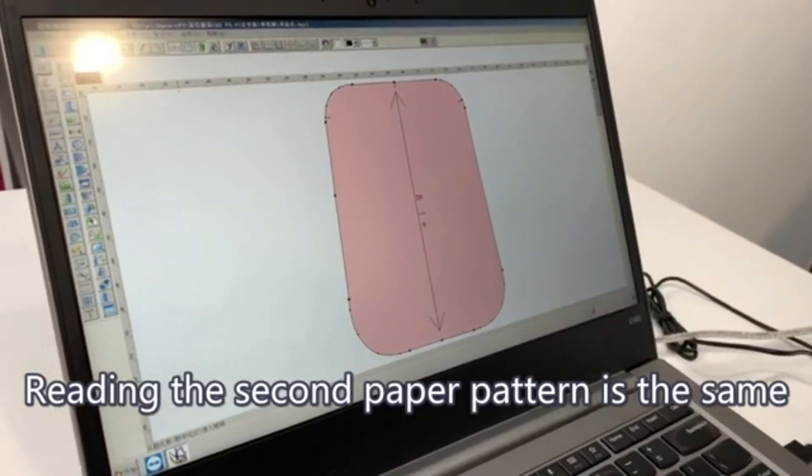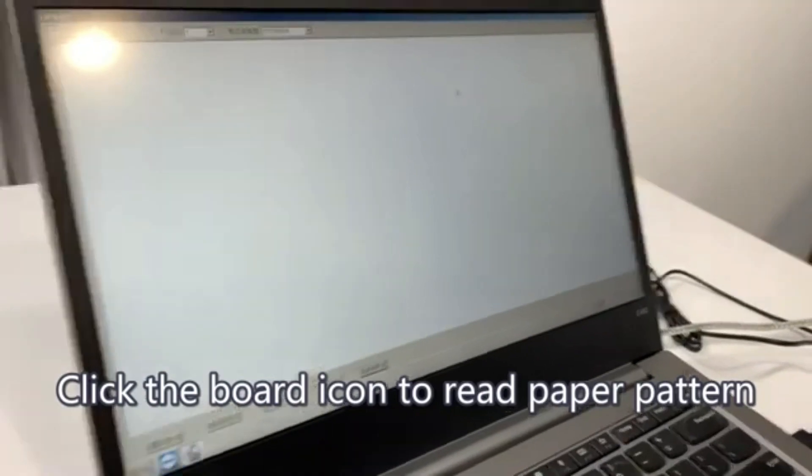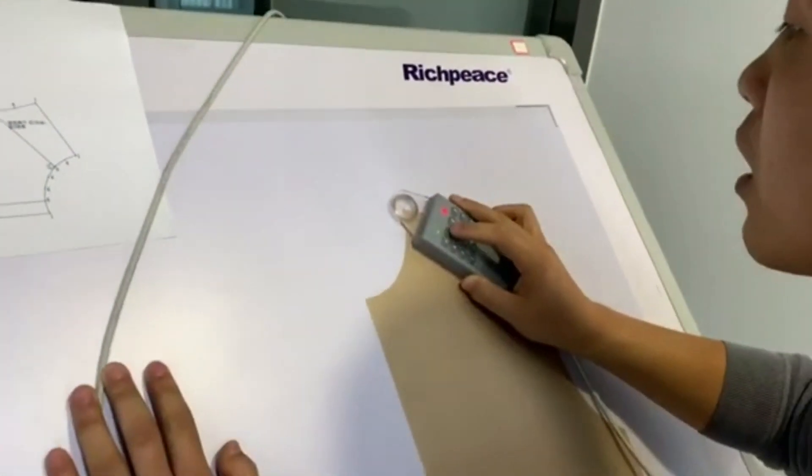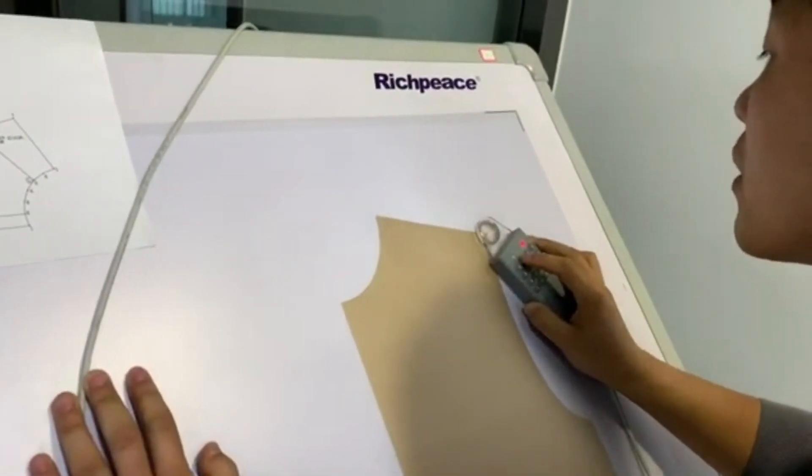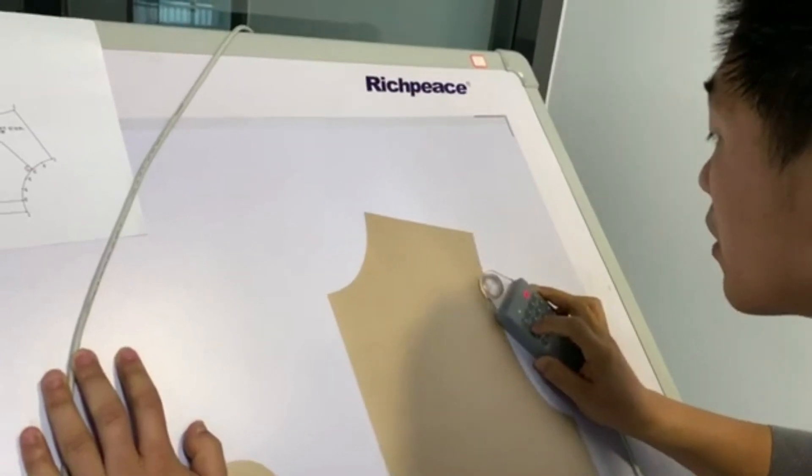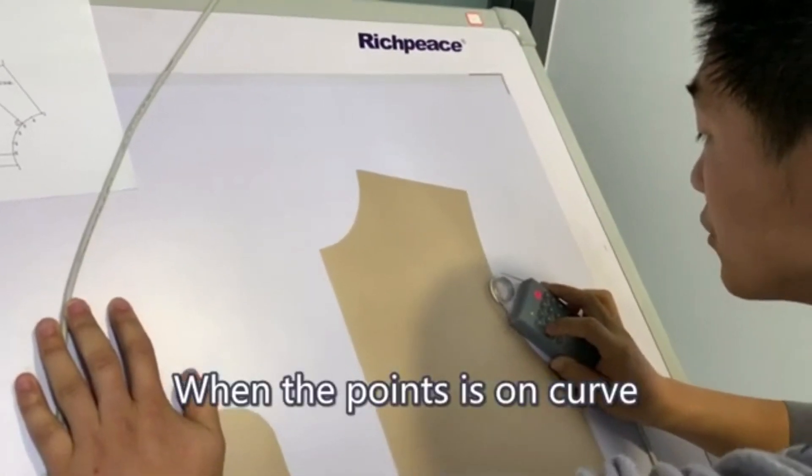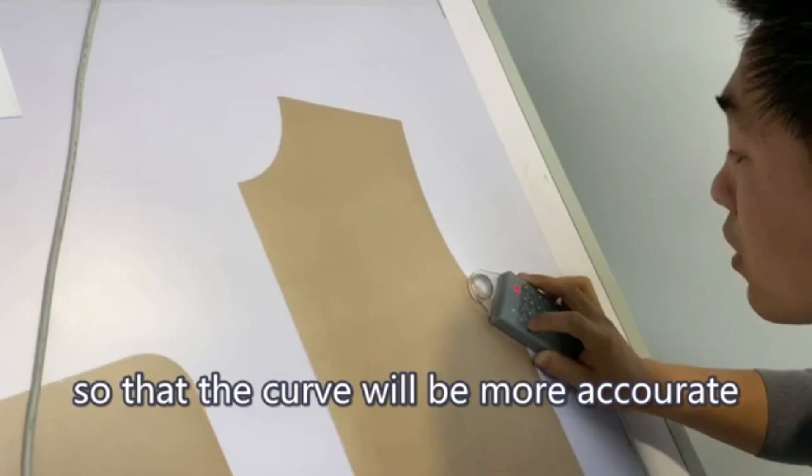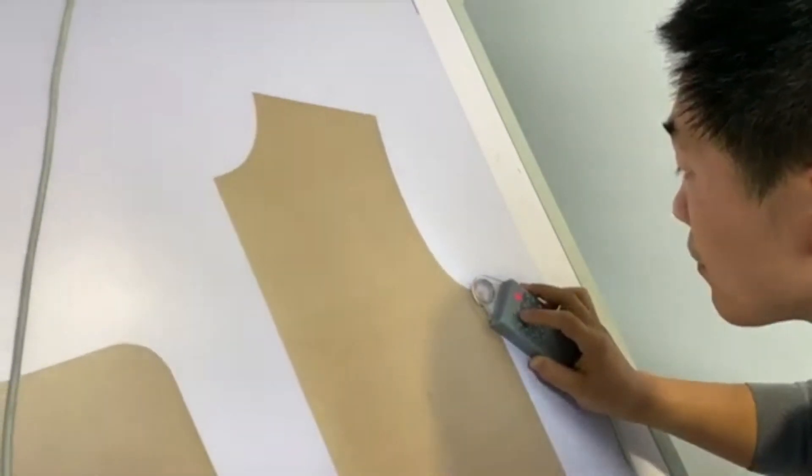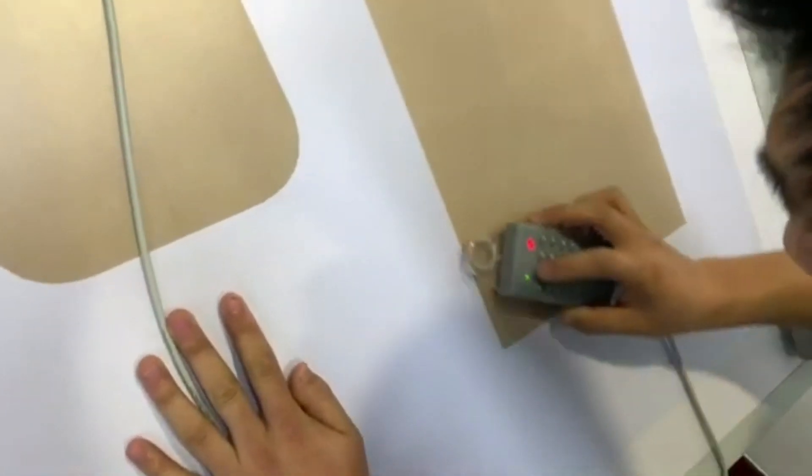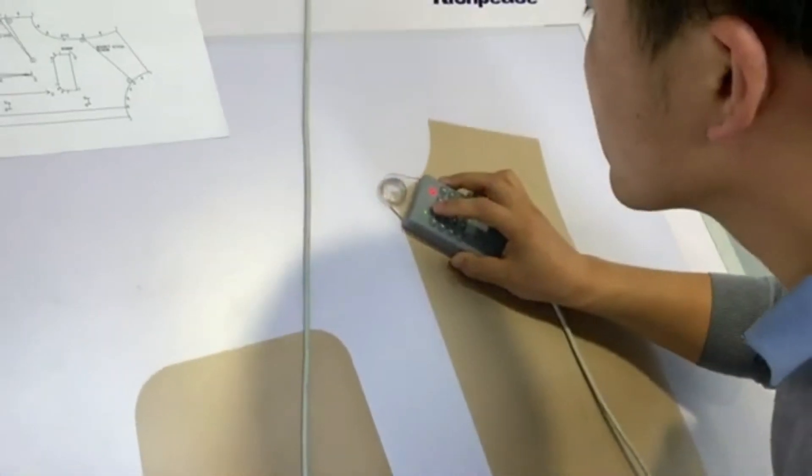The first pattern is repeated. Reading the second paper pattern is the same. Click the board icon to read the paper pattern. When the point is on curve, the points should be as many as possible so that the curve will be more accurate. Then press button 2.